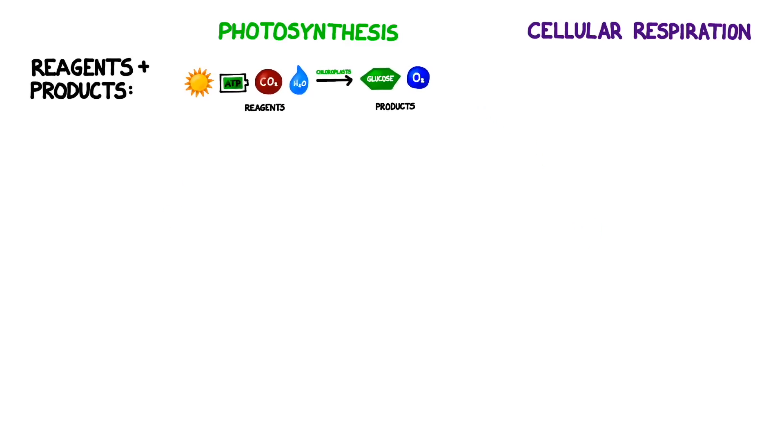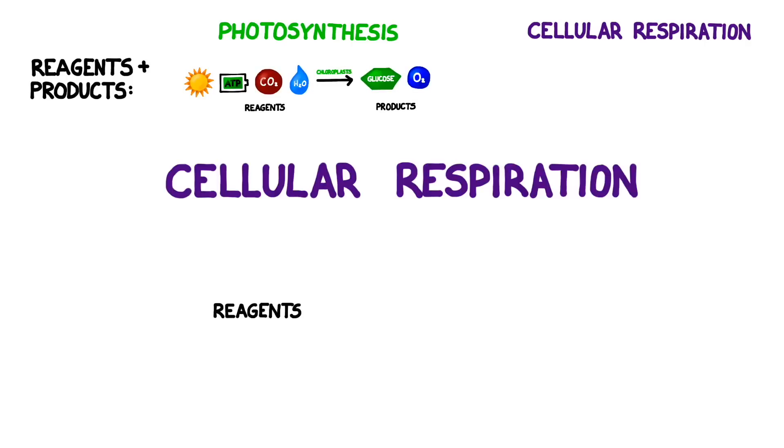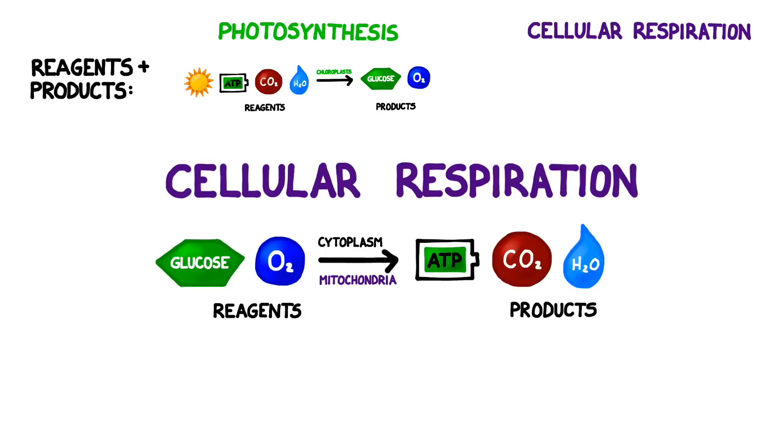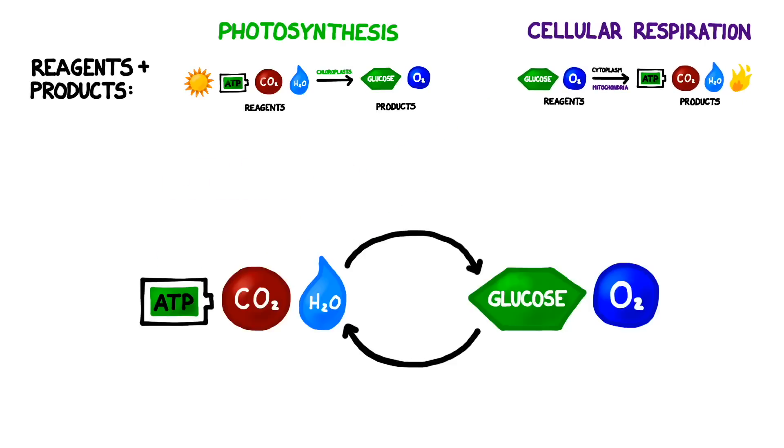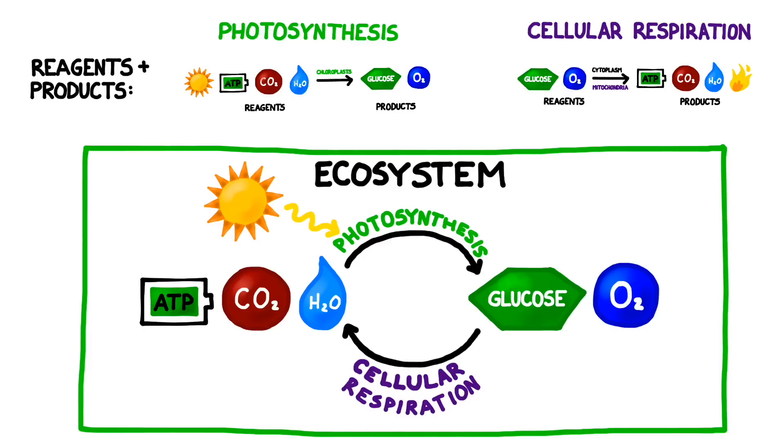Now let's compare the reagents and products of photosynthesis to those of cellular respiration. In cellular respiration the reagents are glucose and oxygen and the process takes place in the cytoplasm and the mitochondria rather than in the chloroplasts. The process produces ATP, carbon dioxide, water, and a little bit of heat. Notice how the products of one set of reactions become the reagents in the other. This is exactly what happens in an ecosystem.